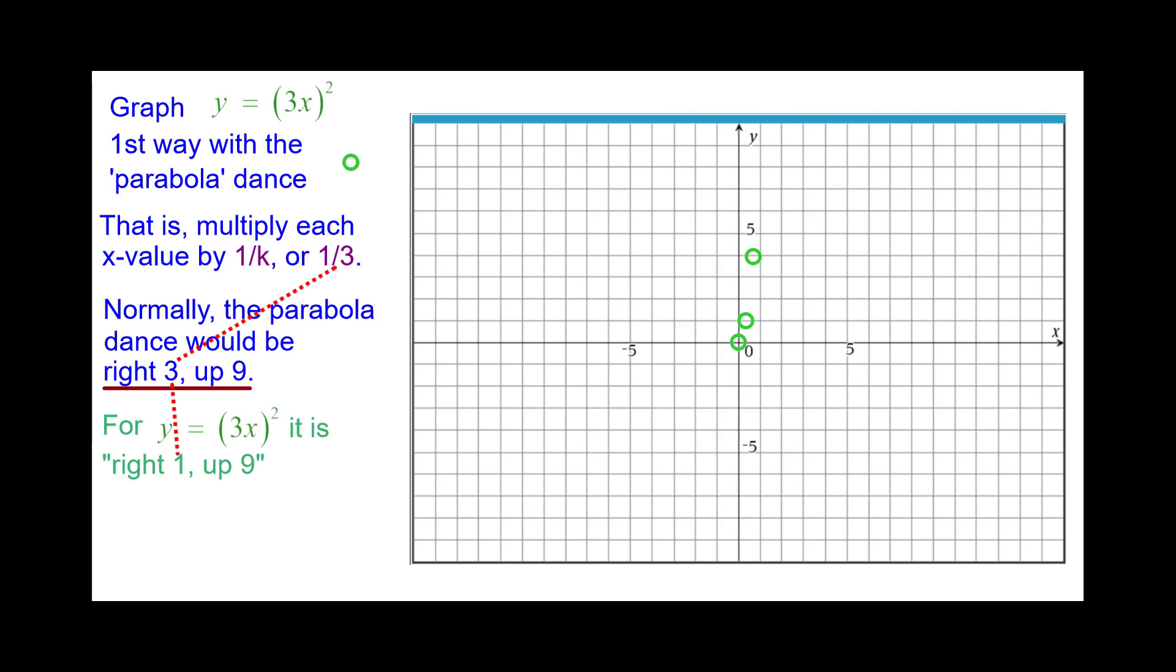And right 3 up 9 will become right 1 up 9. 1 third times 3 is 1. So see if you can do the remaining points. Press pause and zoom when you are ready.